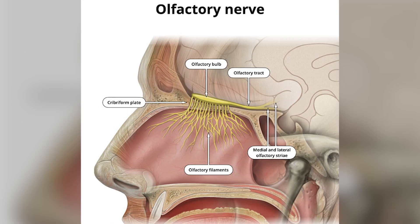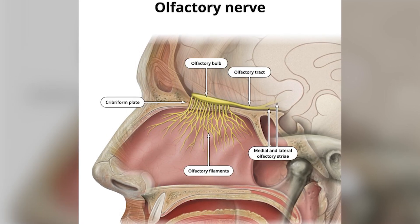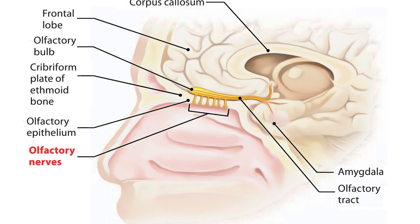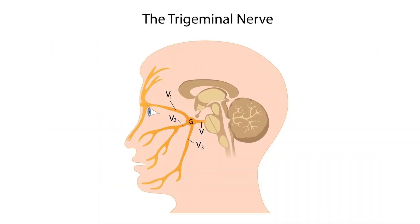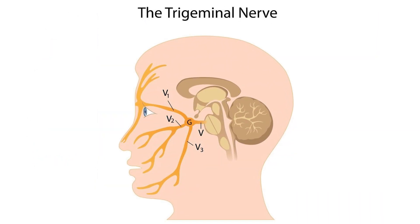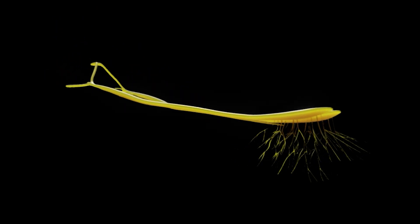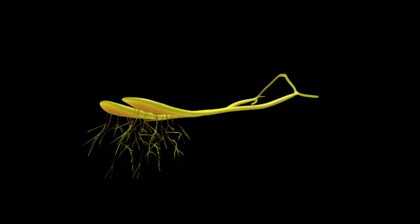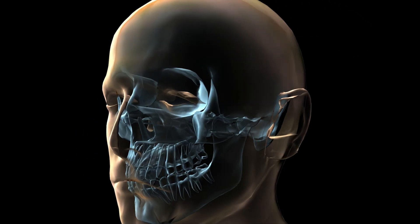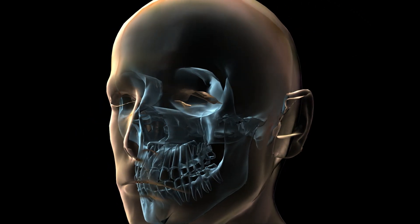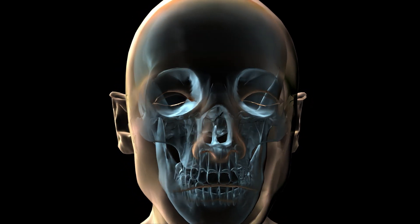The most important nerve related to smell is the olfactory nerve, cranial nerve I. Other nerves provide sensation to the skin of the nose and its internal structures, including the trigeminal nerve, which is responsible for facial sensations. These nerves play an important role in triggering reflexes such as sneezing, which helps clear irritants from the nose. The nose is sensitive to many types of stimuli, including strong smells, dust, and changes in temperature.